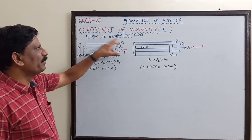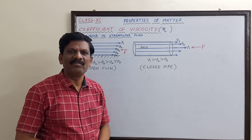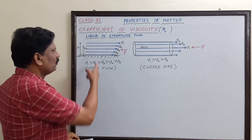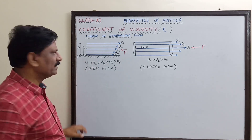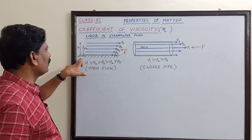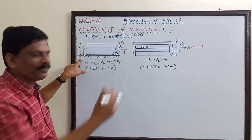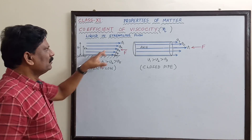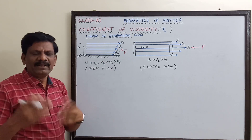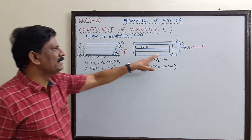We consider the liquid in a streamline flow or laminar flow. First, let us consider water flowing on the ground like a river. Whenever this water or any liquid flows either in open or inside a closed pipe,